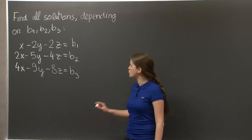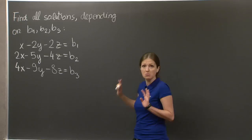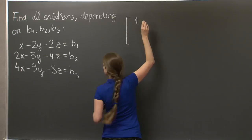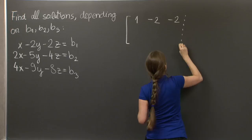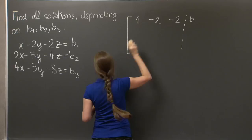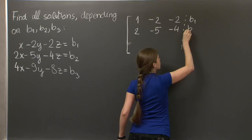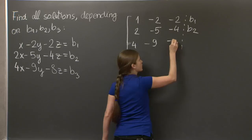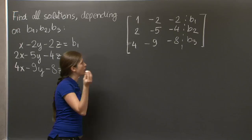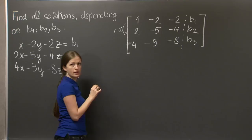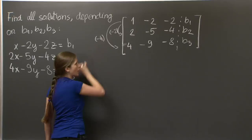And we're back. Let's start by solving this system as if b1, b2, and b3 were numbers. We write the matrix of the system, which is 1 minus 2 minus 2 b1, 2 minus 5 minus 4 b2, and 4 minus 9 minus 8 b3, and we do elimination. So we multiply the first row by minus 2 and add it to the second row, and multiply it by minus 4 and add it to the third row.